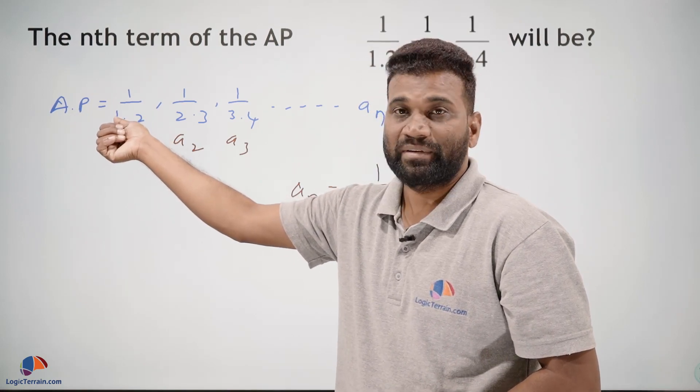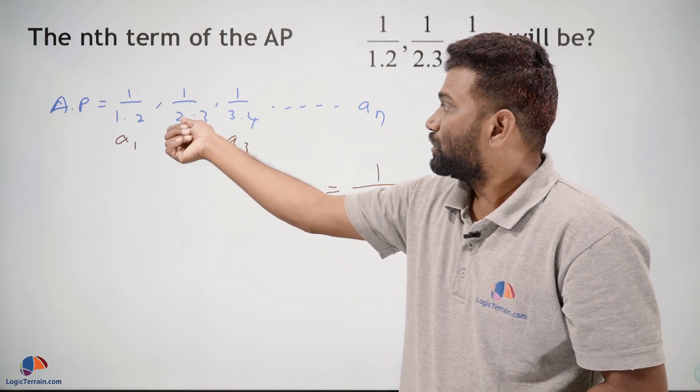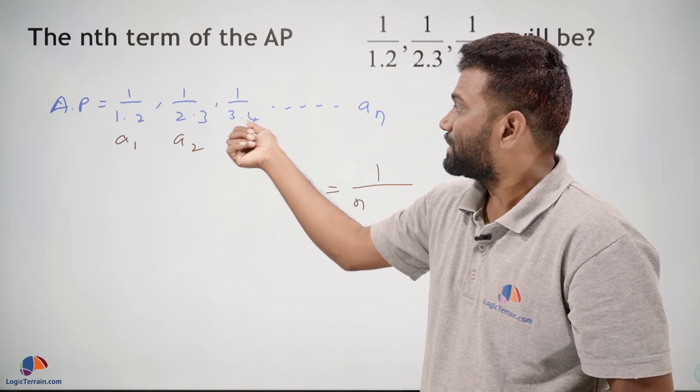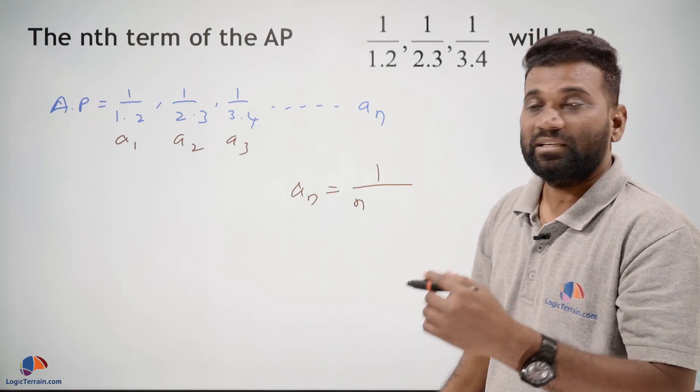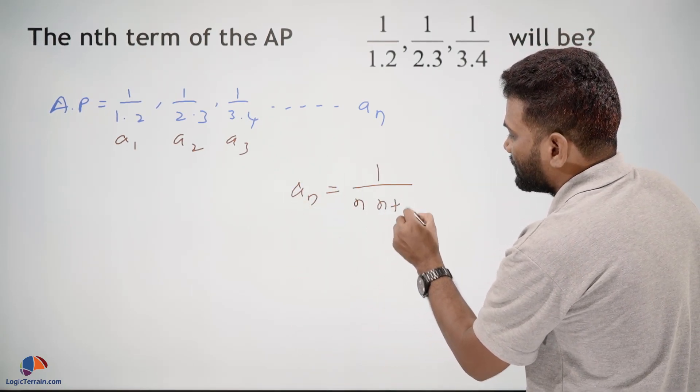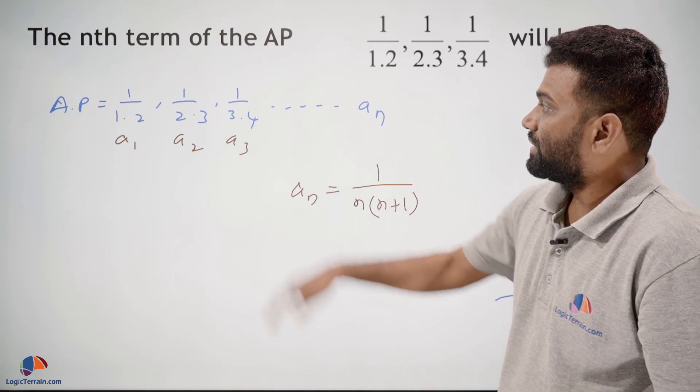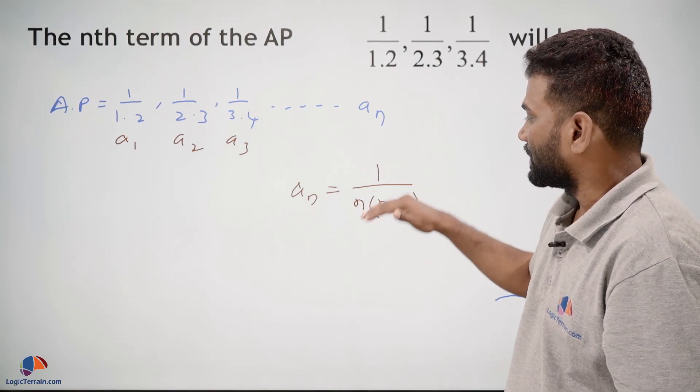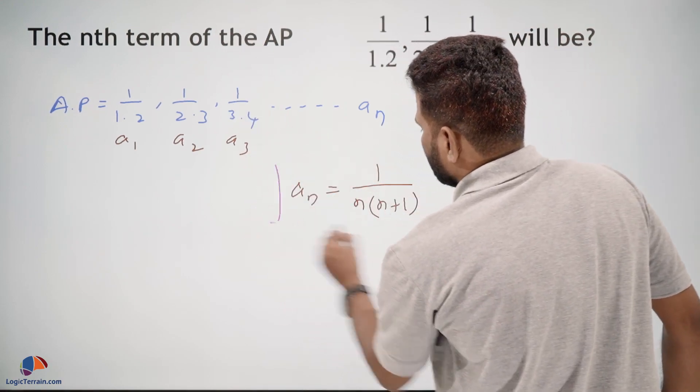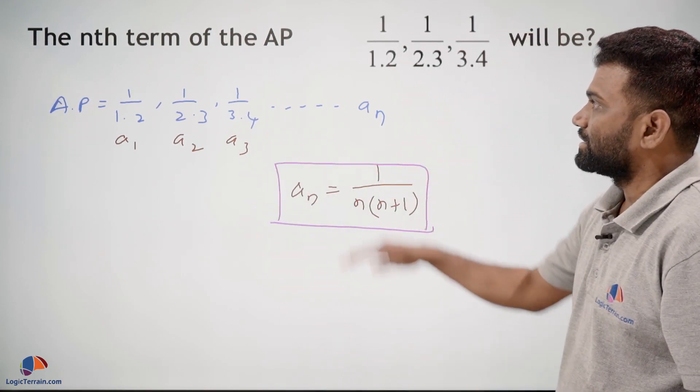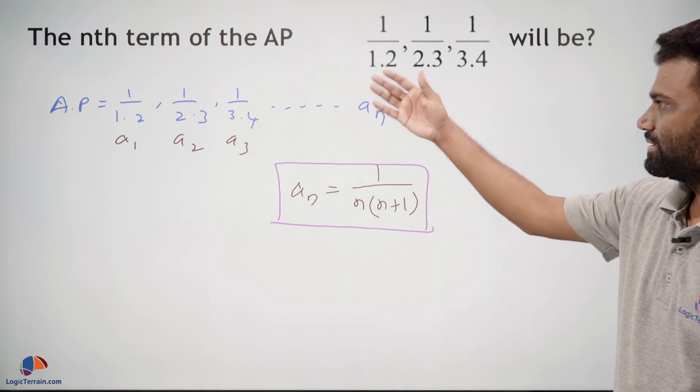is 4. So the next factor series, the nth term is n plus 1. Therefore, the nth term of this sequence must be 1 upon n into (n plus 1). So this is our required nth term of this sequence. This is it.